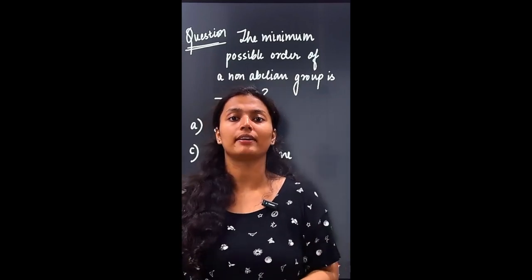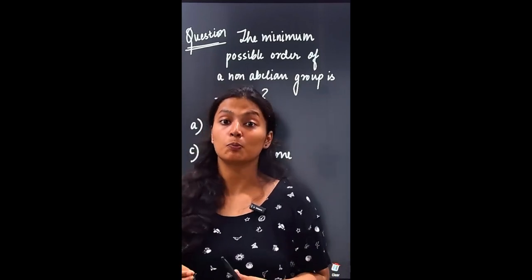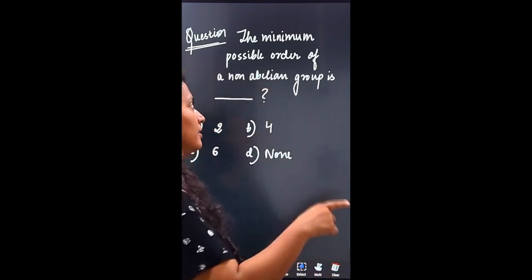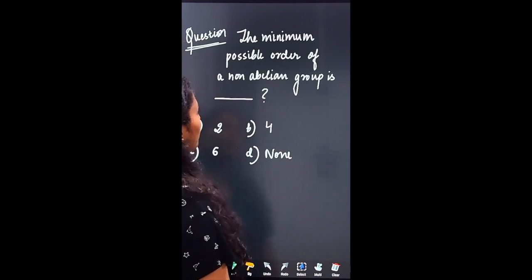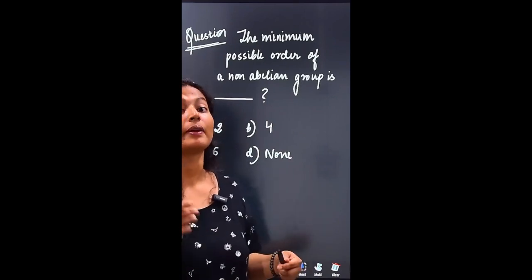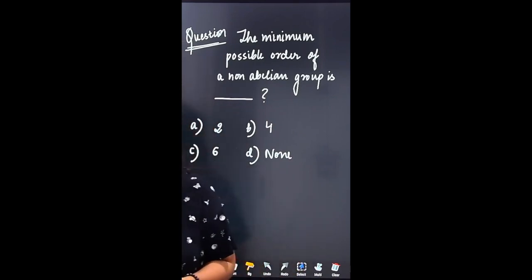You need to know about non-abelian groups, but don't tell the group, just tell the order of the group. So the minimum possible order of a non-abelian group is your question. Try it.